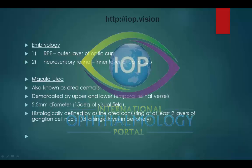The macula lutea, also known as the area centralis, is demarcated by the upper and lower temporal retinal vessels. It is 5.5 mm in diameter and corresponds to 15 degrees of the visual field. Histologically, the macula lutea is defined as the area consisting of at least two layers of ganglion cell nuclei, as opposed to a single layer in the peripheral retina.